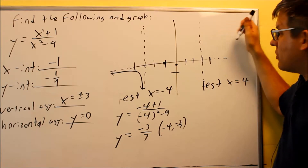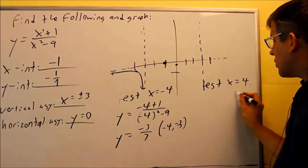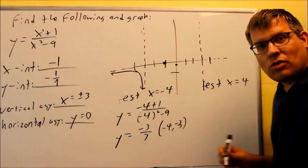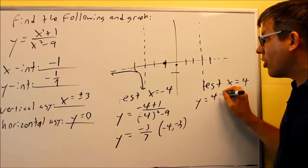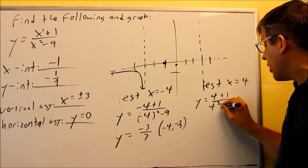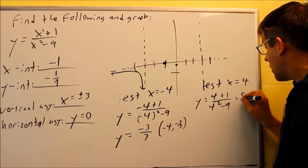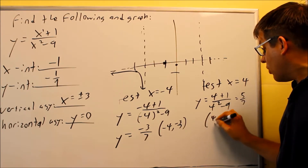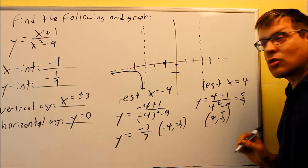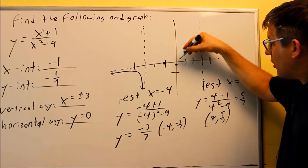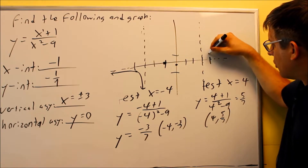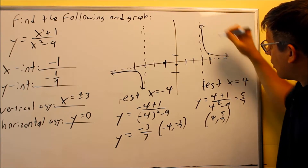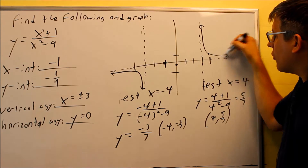Now I check the right outer region using x equals 4. y equals (4 plus 1) over (4 squared minus 9) = 5 sevenths. So the coordinate is (4, 5 sevenths), which is a little less than 1. Plotting that point tells me the graph is above the horizontal asymptote on the right side, curving and following the vertical asymptote.